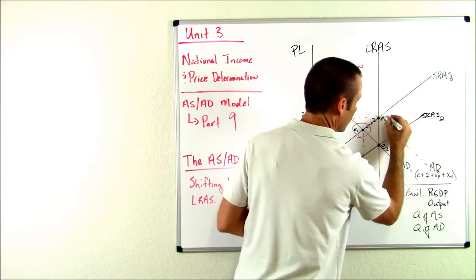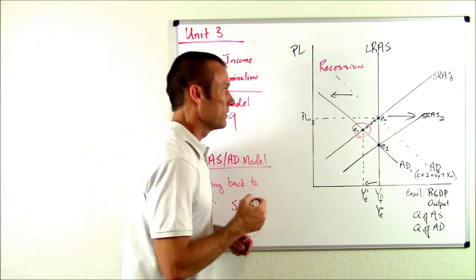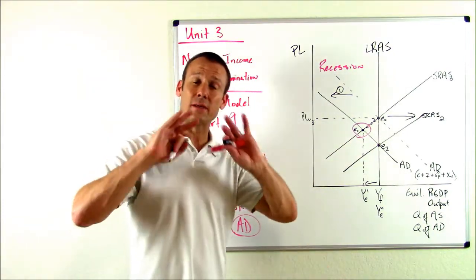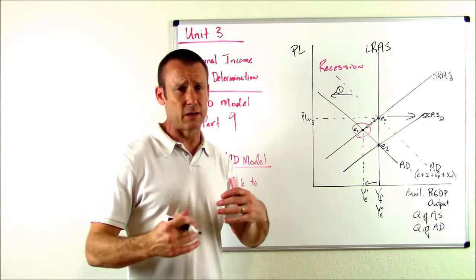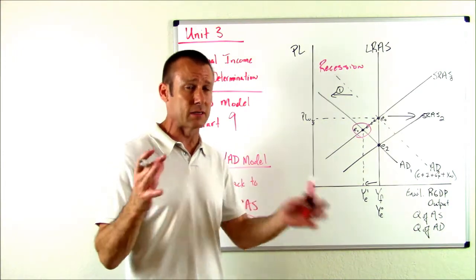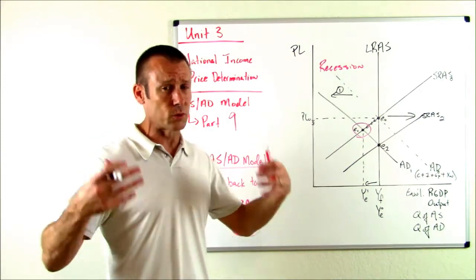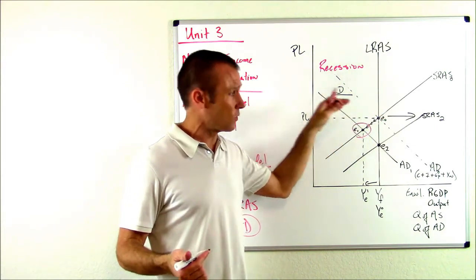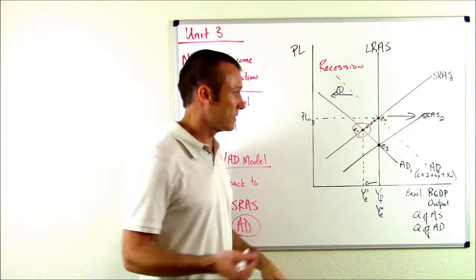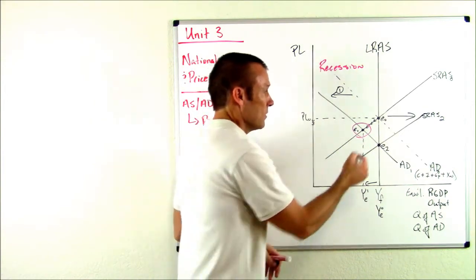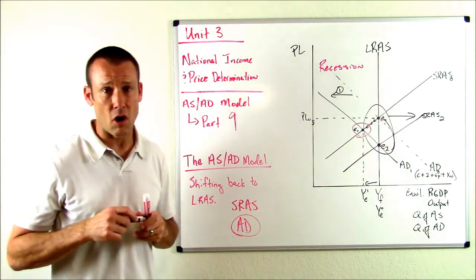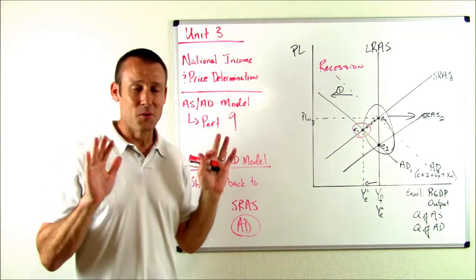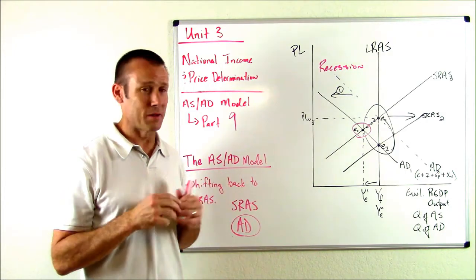And so we are going to end up right there at E sub two, SRAS sub two, that shift. This was my initial shift. That was the stock market. Now we got into this recession and then we did nothing. And we had to wait a certain amount of time. Some people might say a year. Some people might say 10 years. There's a lot of disagreement, but some amount of time we're going to have to wait for those workers to accept lower wages. And when those workers accept lower wages, that's right, the cost of production is going down and SRAS is shifting to the right back to E sub two. One way or another guys, we're heading back to that LRAS curve. Barring some really bad policy action, but one way or another for the most part, we're heading back to that LRAS curve.